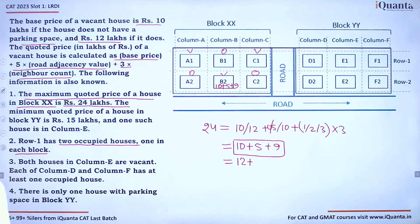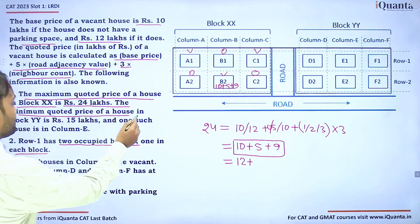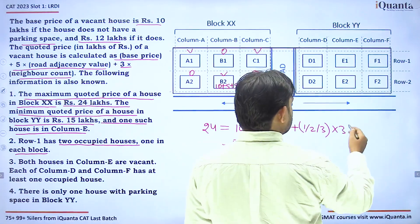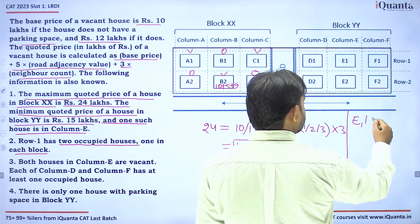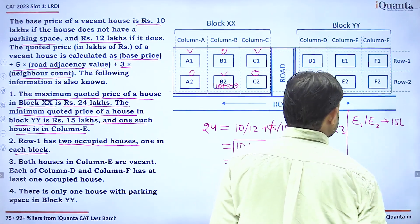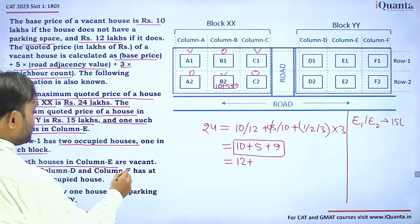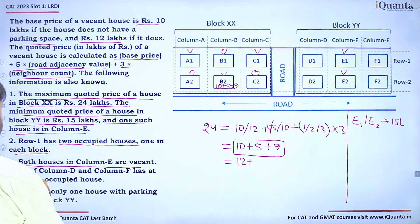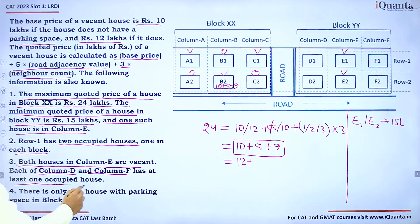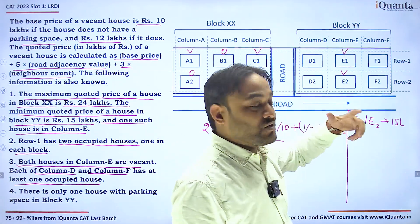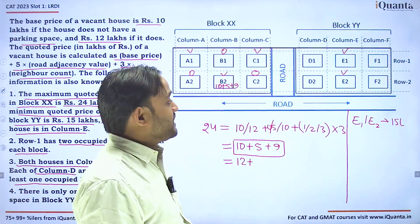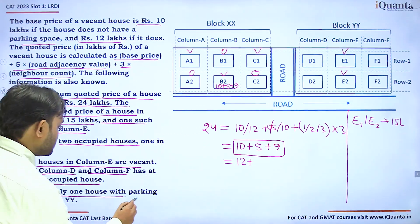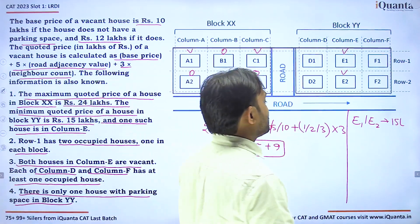For Block YY, the minimum quoted price is 15 lakhs and one such house is in Column E. Both houses in Column E — E1 and E2 — are vacant. Each of Column D and Column F has at least one occupied house. There is only one house with parking space in Block YY.